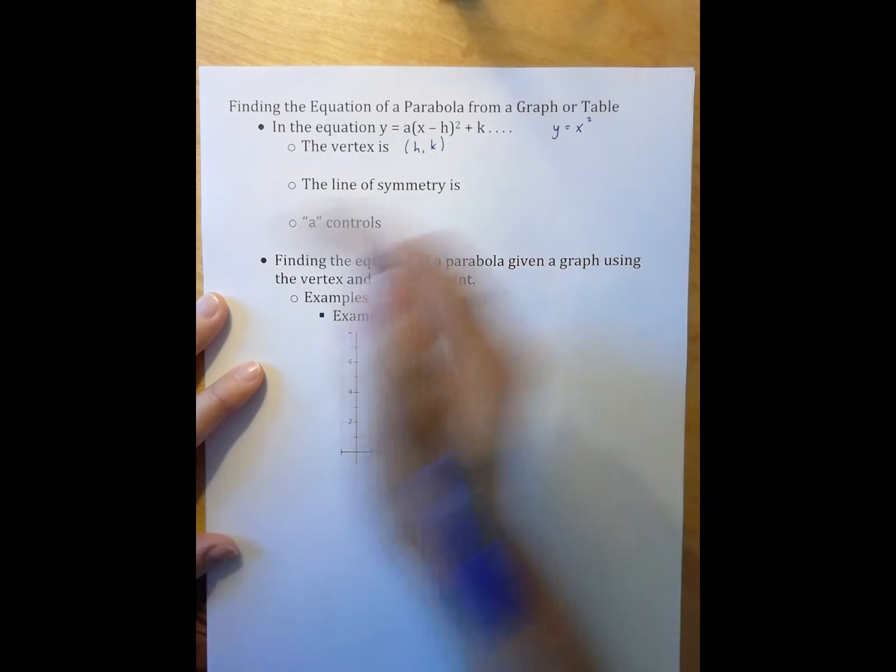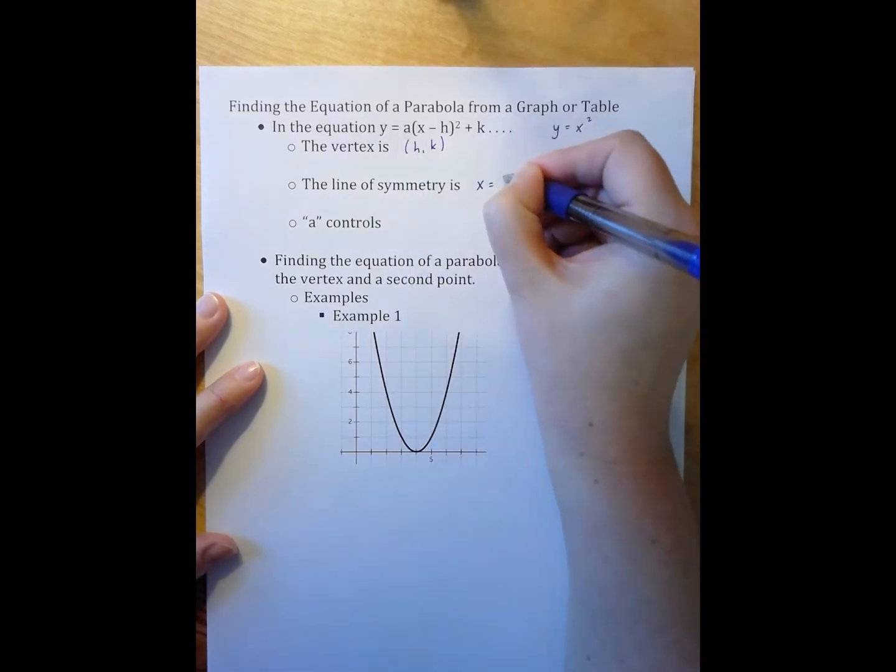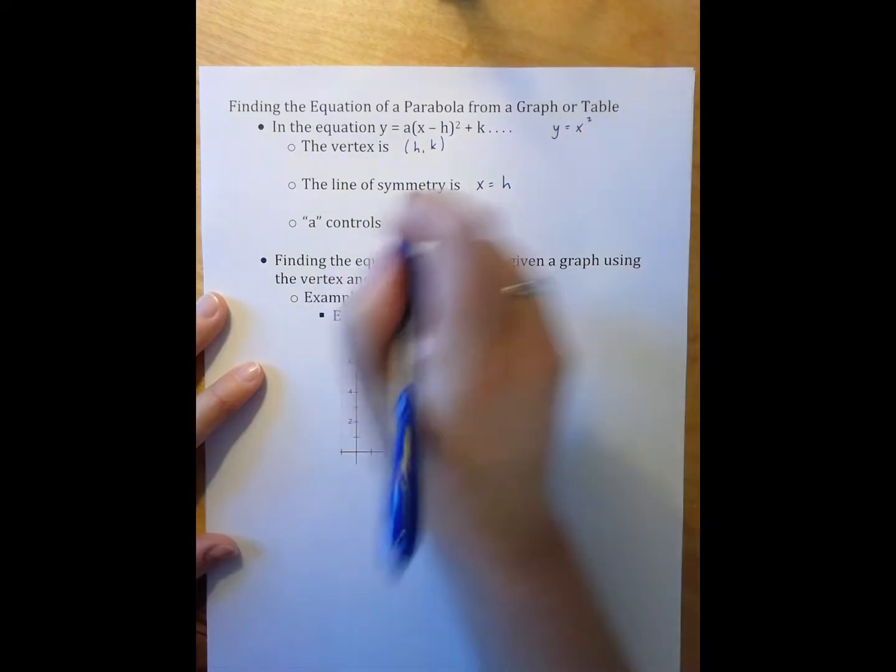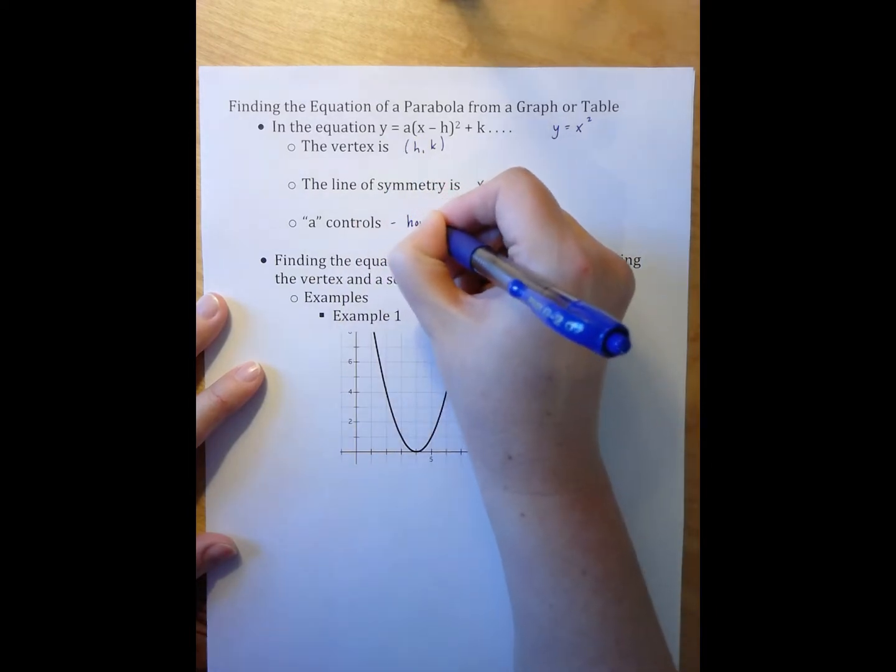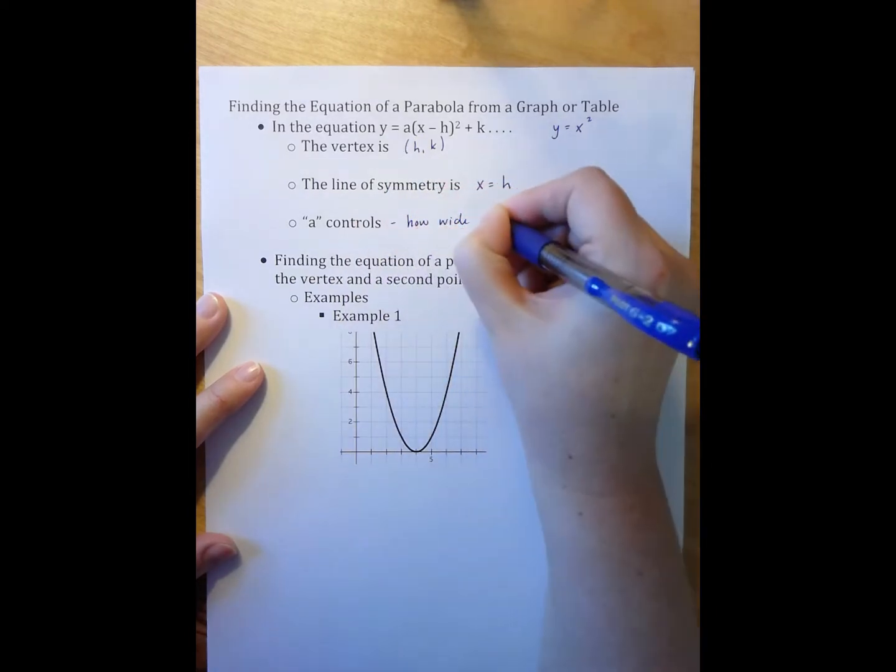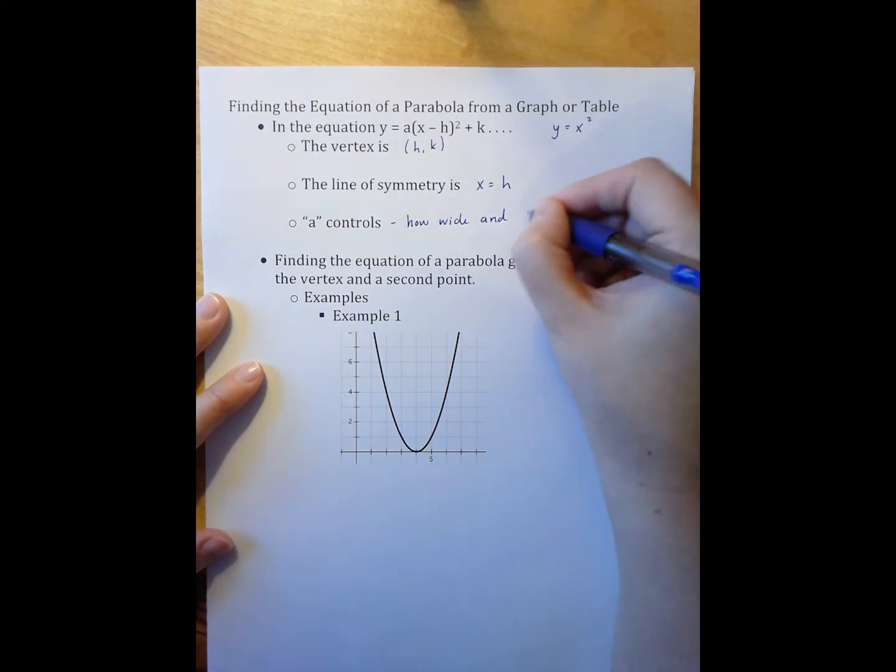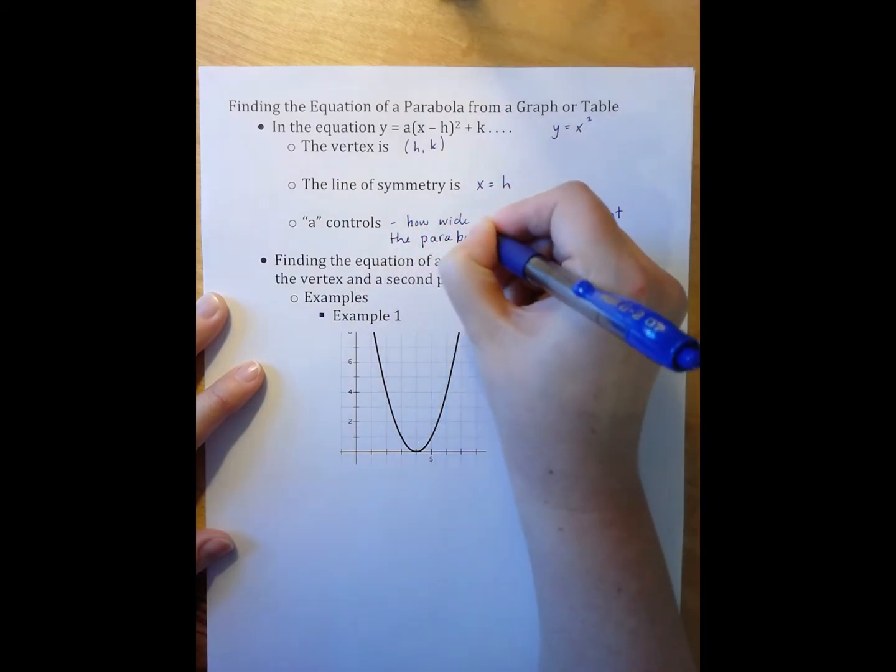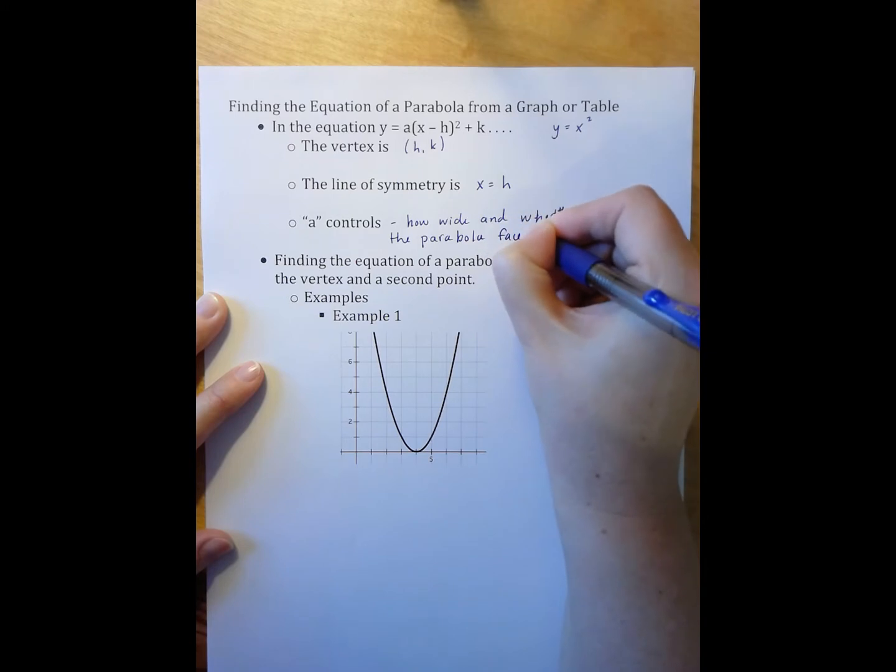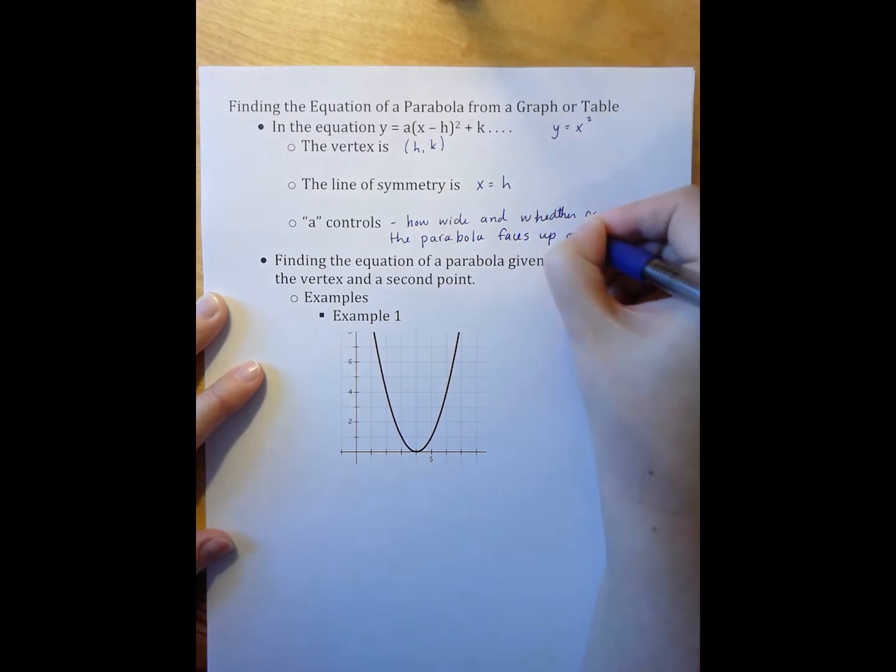The line of symmetry is x equals h, and then the a controls how wide and whether or not the parabola faces up or down.